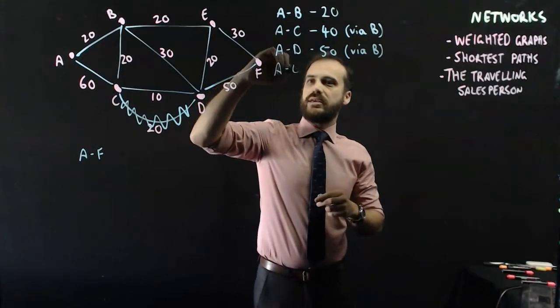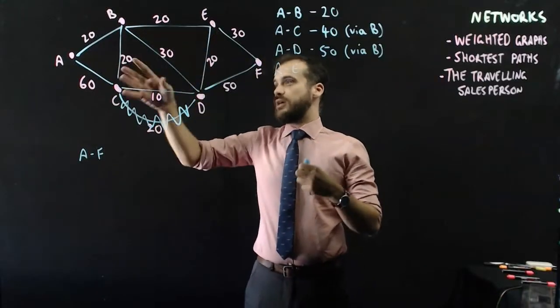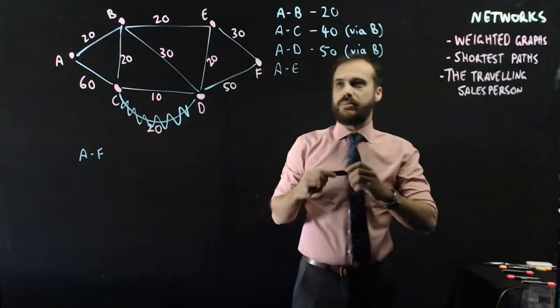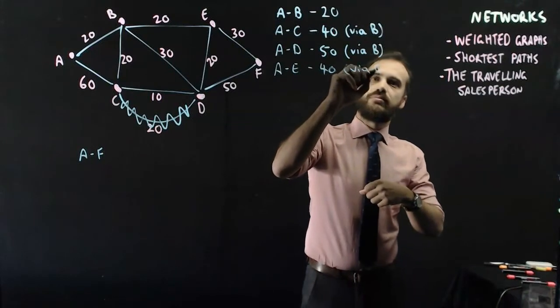Okay, what about A to E? A to E, 20 plus 20, that's 40. That looks like the shortest distance. Anything else is going to be quite roundabout. So, 40, and again, that's via B.